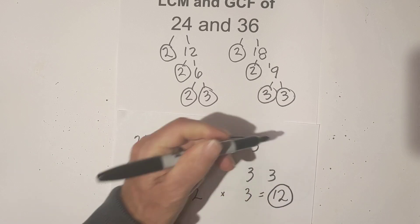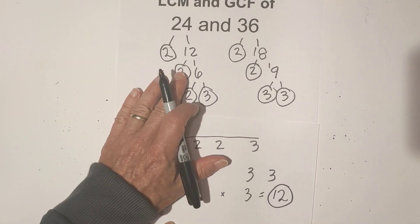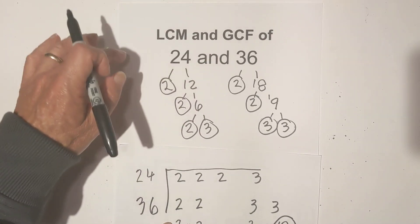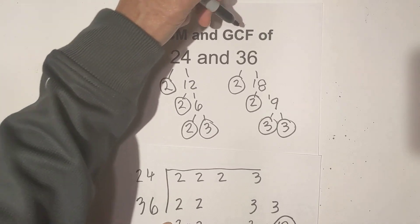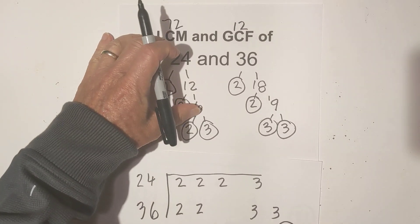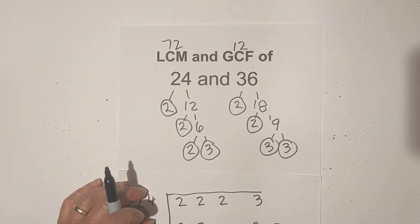So the greatest common factor is 12. In summary, the LCM is 72 and the greatest common factor is 12 of these numbers. Thanks for watching, and remember, kindness multiplies kindness. Be kind to someone today.